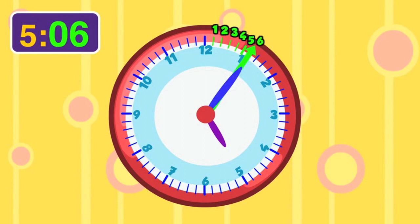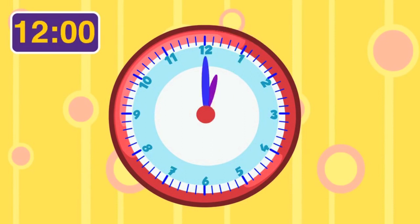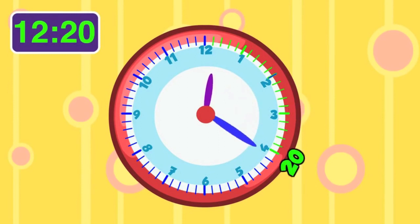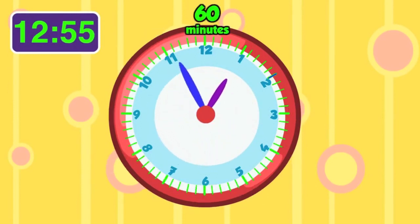so the time is 5-0-6. Every number the hour hand goes by represents one hour at a time. Pick up the minutes out of 60 and you'll be telling time with me.